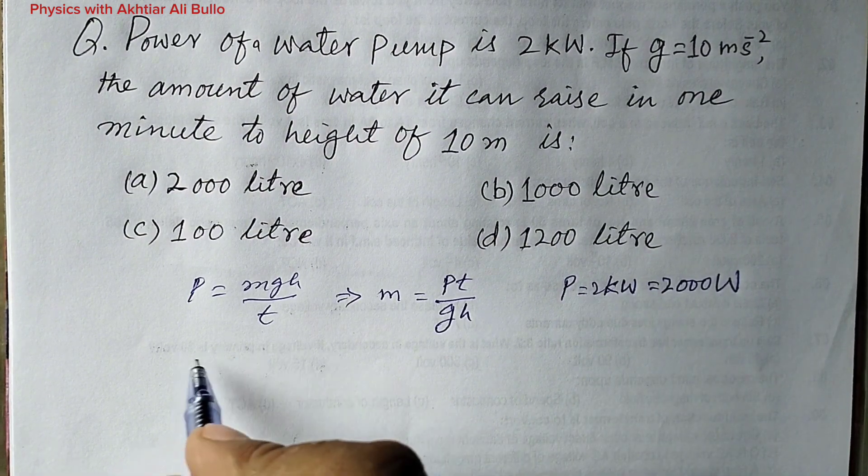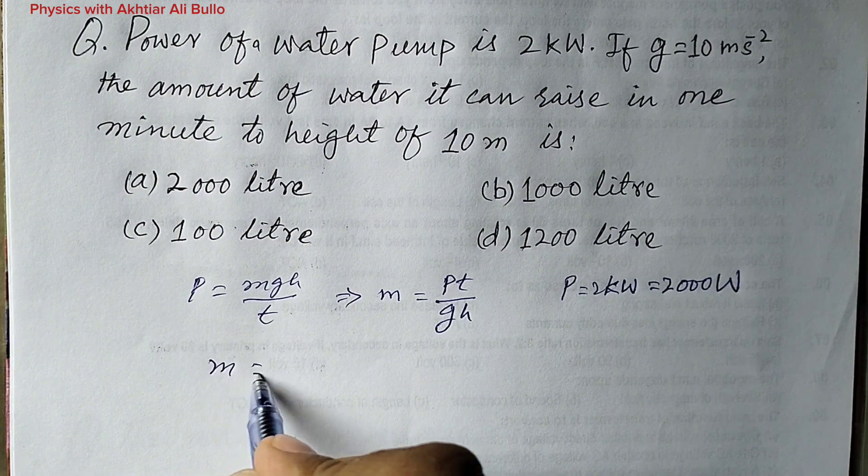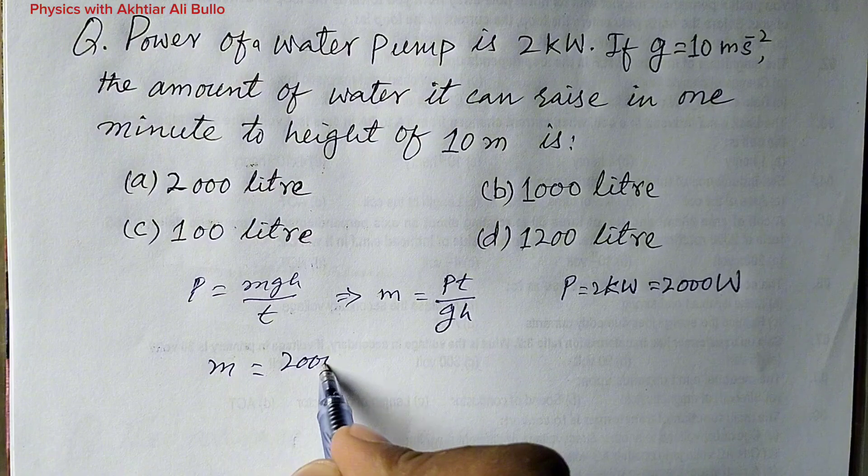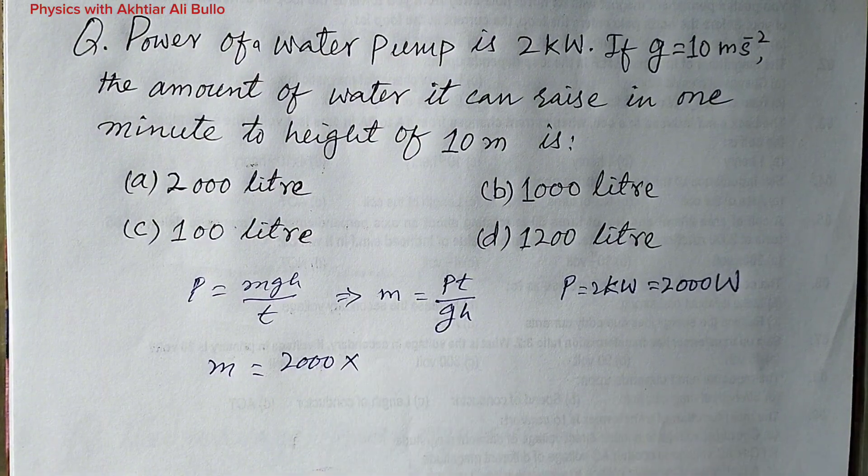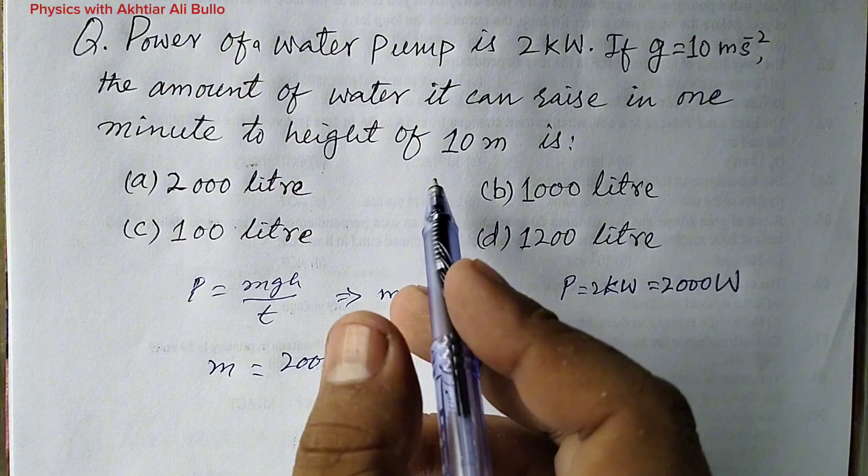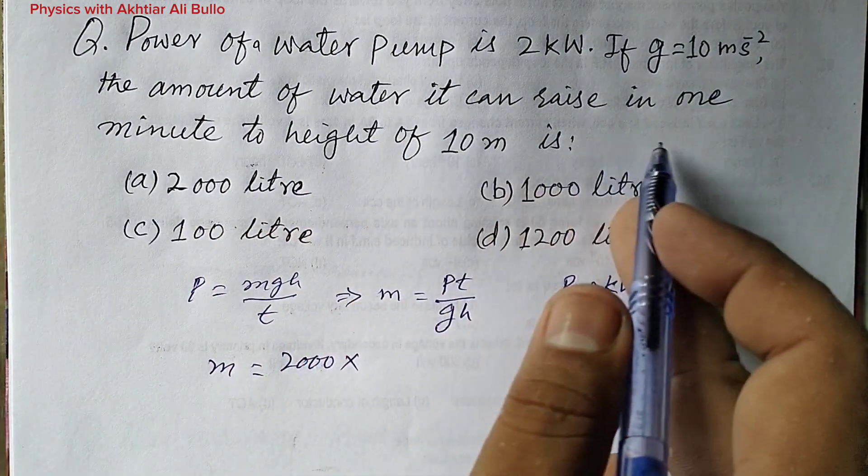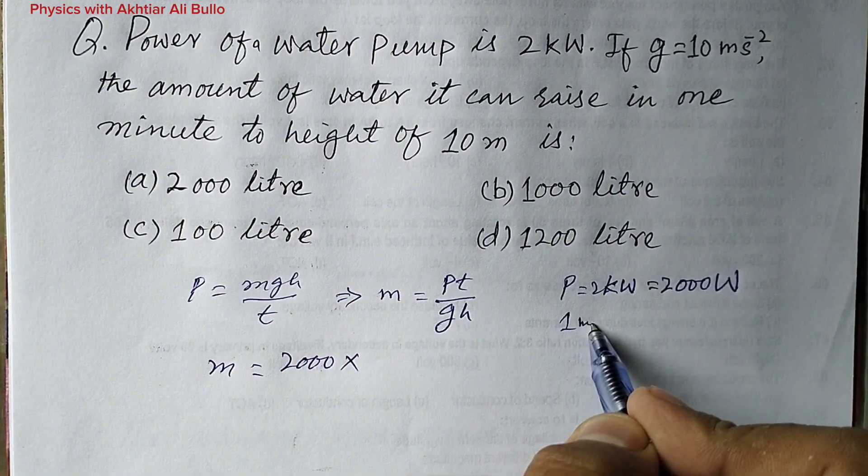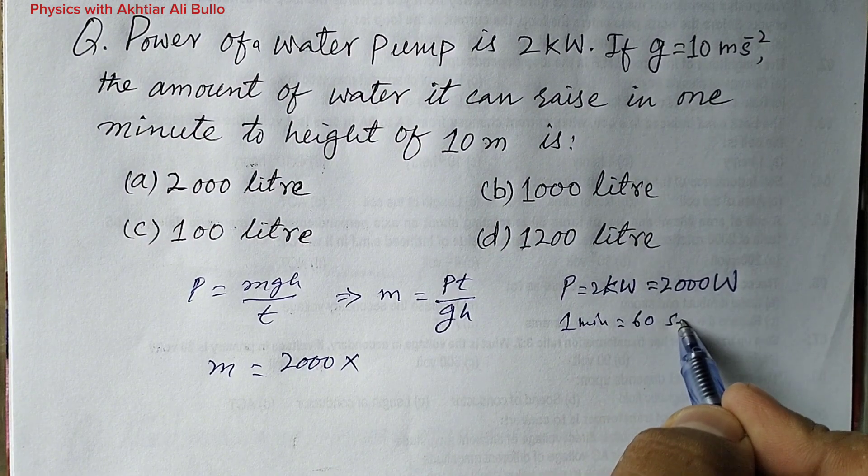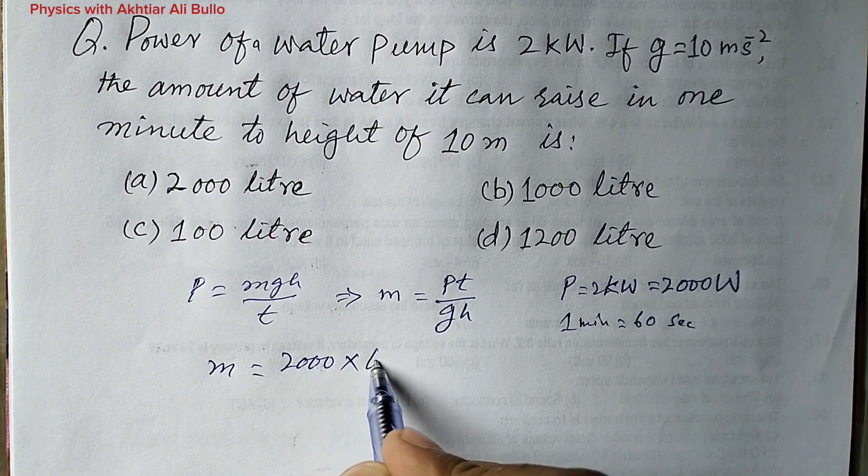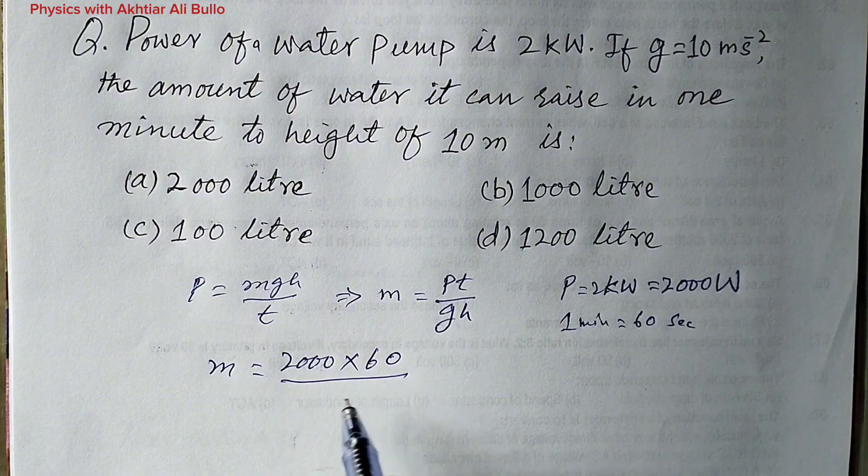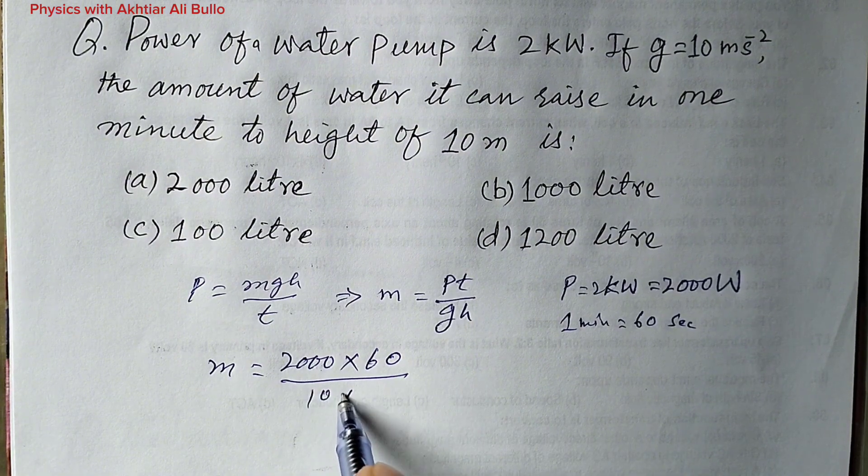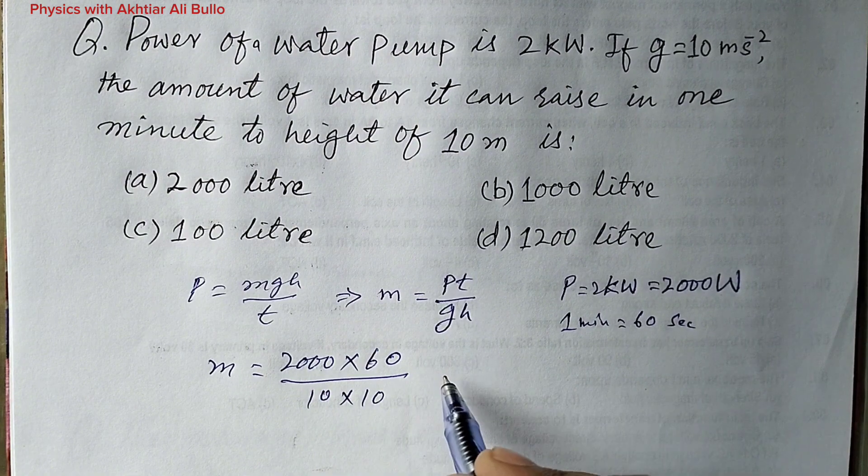By putting the values, m will be equal to the value of power is 2,000, into the time is 1 minute, which is equal to 60 seconds, so 60 upon the value of g is 10 and height obtained is 10 meter.